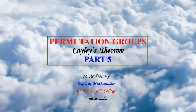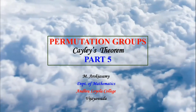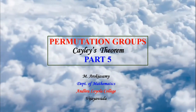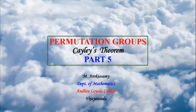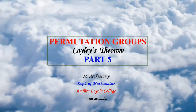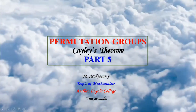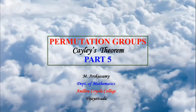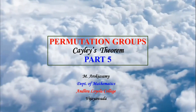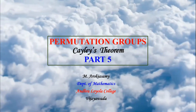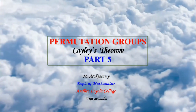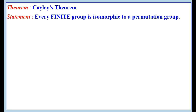The modern definition of abstract group was given by Cayley. Cayley's theorem is one of the classic theorems of modern algebra. This theorem links a given finite group and groups of permutations. A group of permutations is a subgroup of some symmetric group. The statement of this theorem is: every finite group is isomorphic to a permutation group.